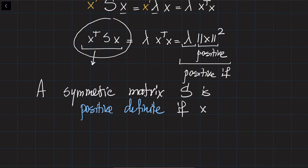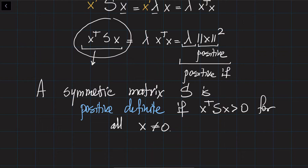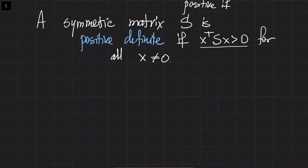If X-transpose S X is positive for all non-zero vectors X, then all eigenvalues are positive. This is not really a practical test — when given a 3 by 3 or 4 by 4 matrix you cannot just use this to check positive-definiteness. It is rather a theoretical tool, useful when you have a composition or decomposition of matrices.